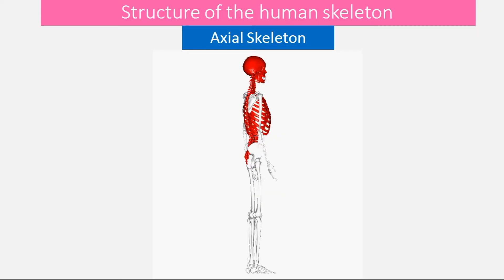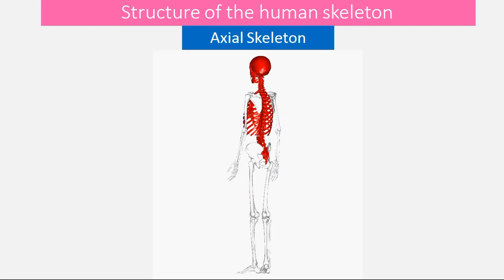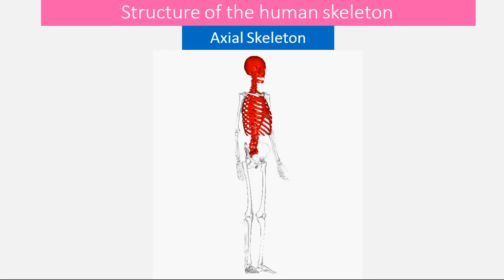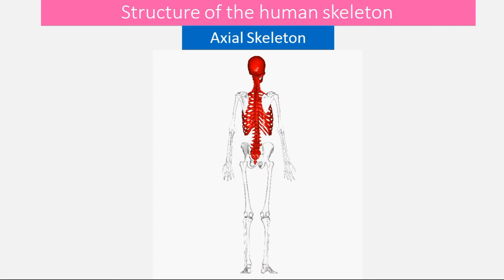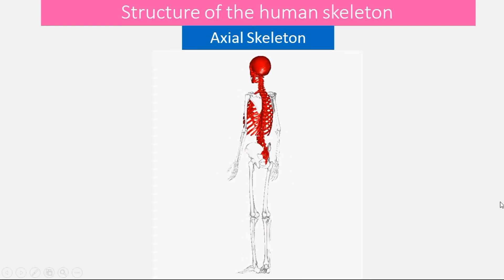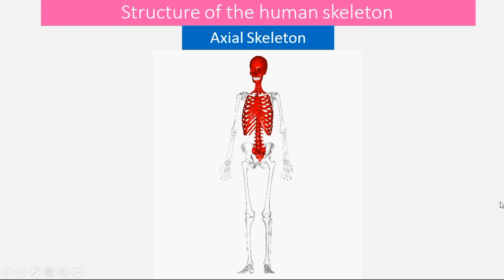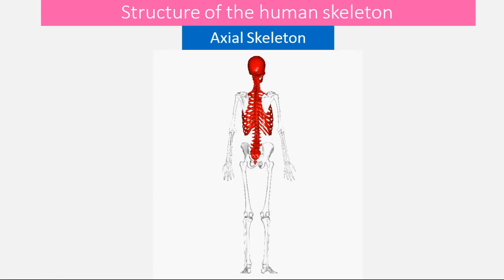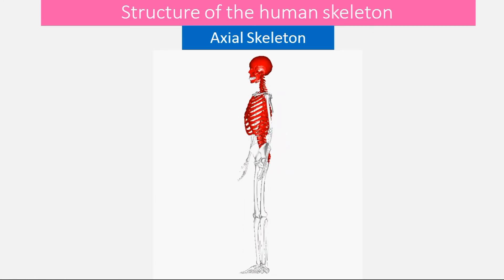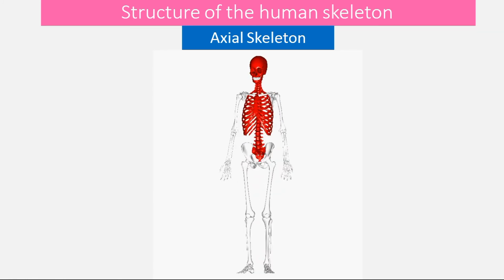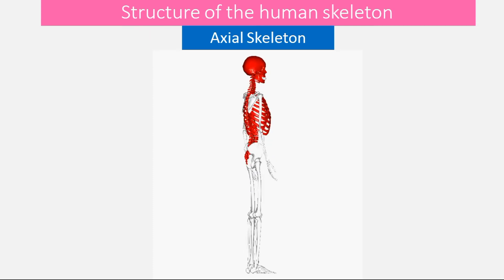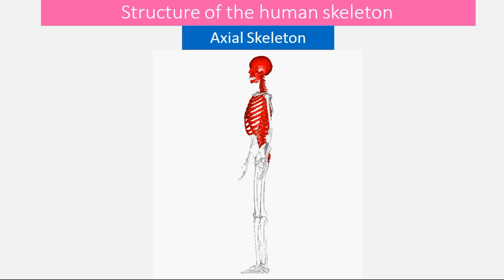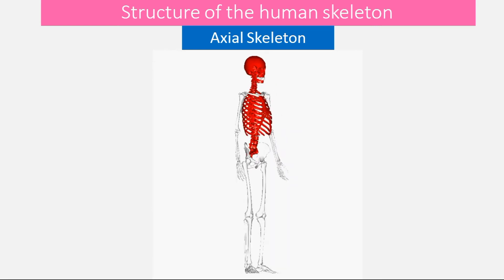The human skeleton can be divided into two basic parts. The first is the axial skeleton, which essentially makes up the axis of the skeleton. The axial skeleton comprises the cranium or skull, the vertebrae or backbone, and the rib cage.